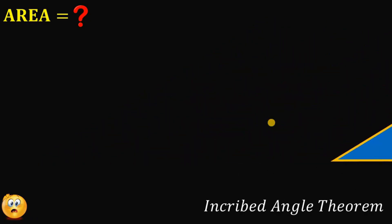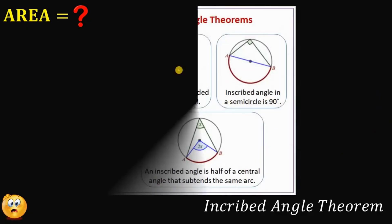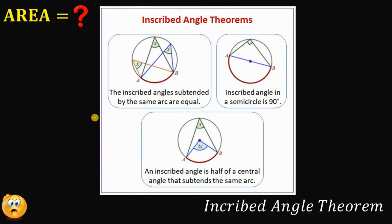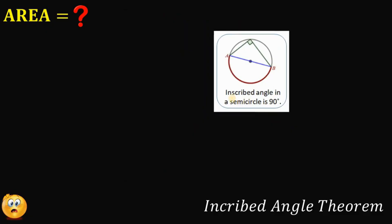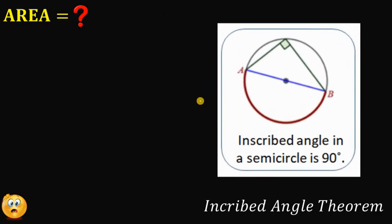So what is the Inscribed Angle Theorem? The first part says inscribed angles subtended by the same arc are equal. The second says the inscribed angle in a semicircle is always 90 degrees. The third says an inscribed angle is half of the central angle that subtends the same arc. Here, we are interested in the second theorem: the inscribed angle in a semicircle is always 90 degrees.